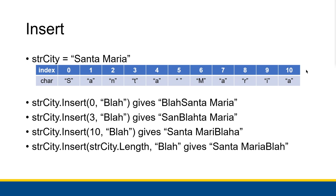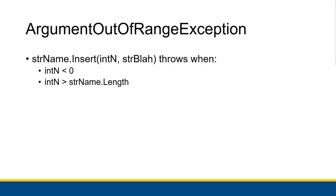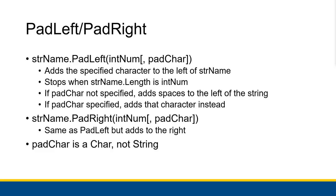But we can start it at 11, unlike the other methods that we've seen before. So we get an argument out of range exception for the insert method when our starting index int N, in this case, is less than 0. Or when int N is greater than string name.length. But, like I said before, it's okay if int N is equal to string name.length.